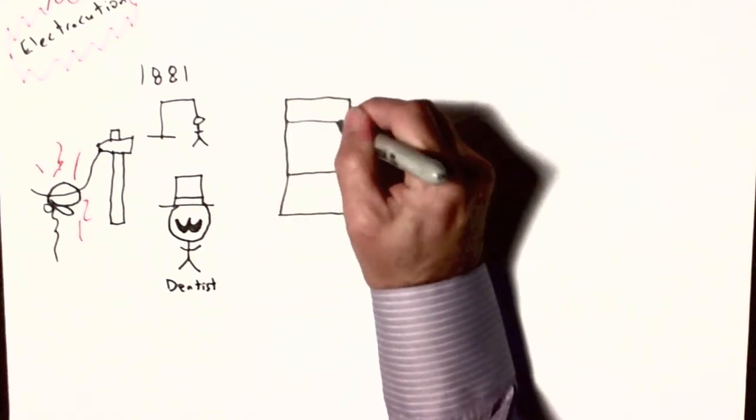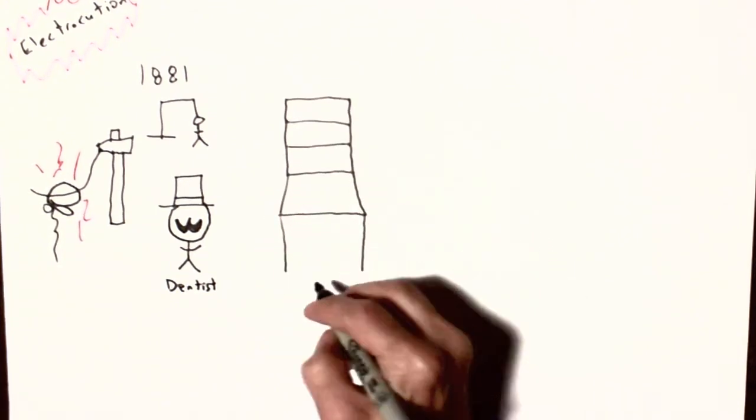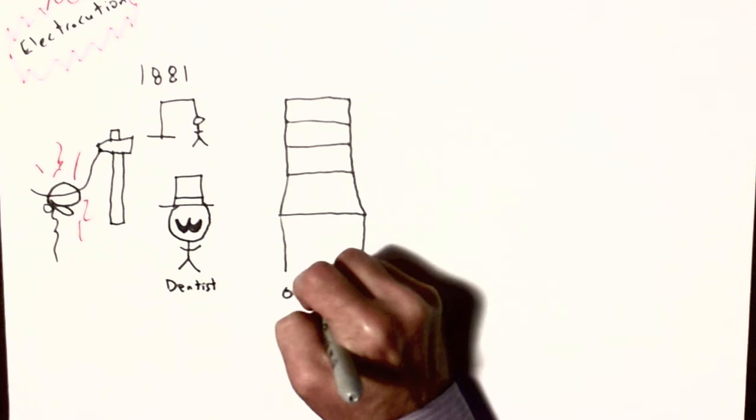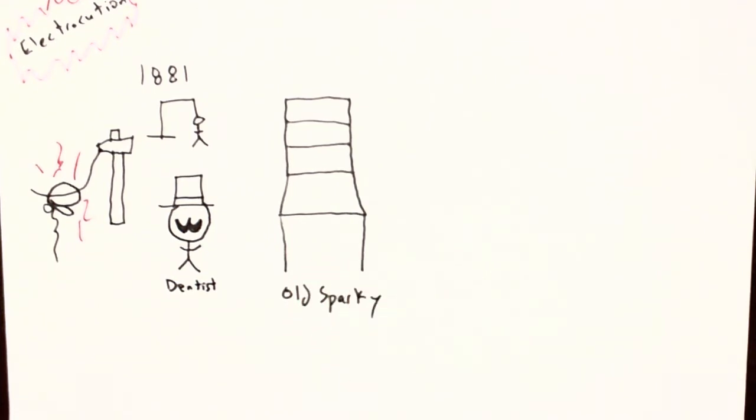So, this is a very fast sketch of Old Sparky. Old Sparky is the electrocution chair used in the state of Florida.